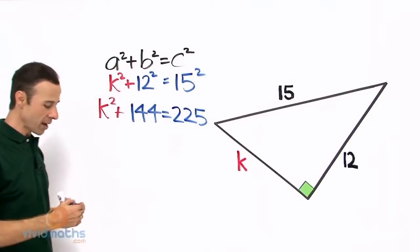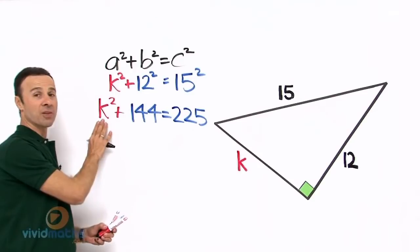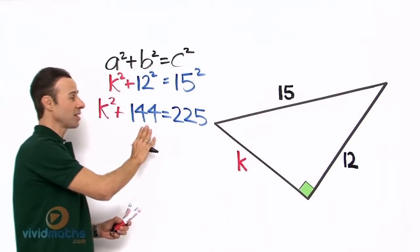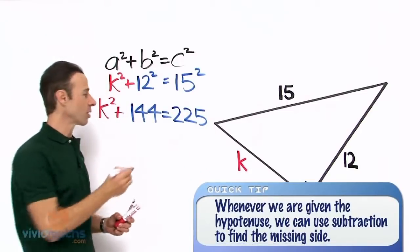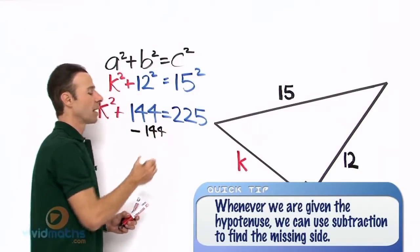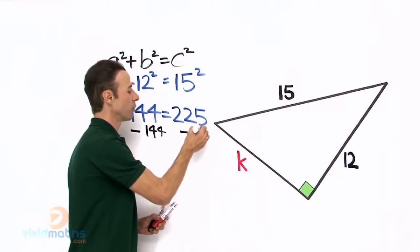Let's take away 144 from both sides so we can get K² by itself. We're going to take this number 144 and bring it over to that side. We subtract 144, and we do the same on the other side of the equals - subtract 144.